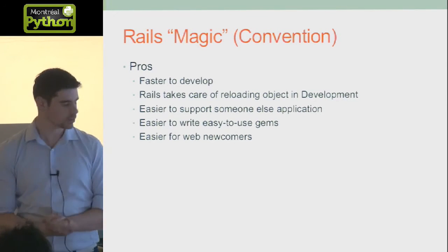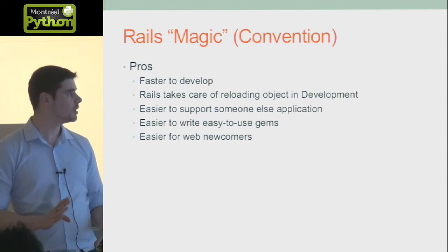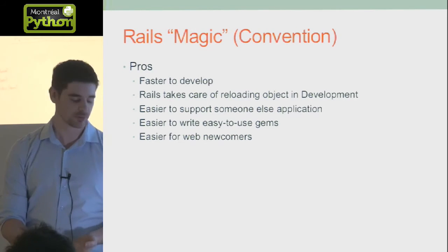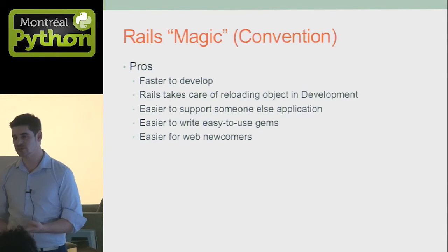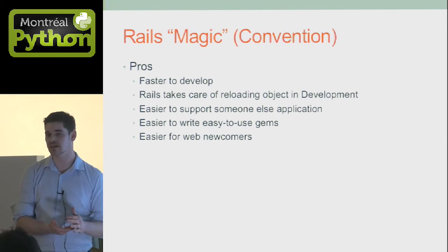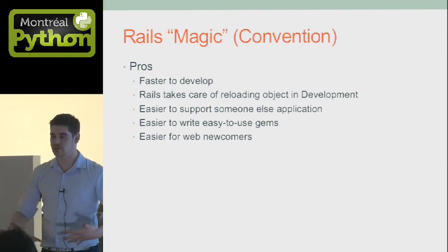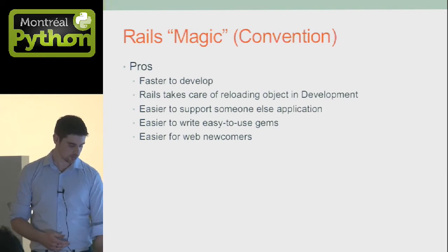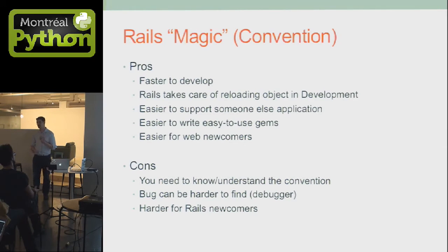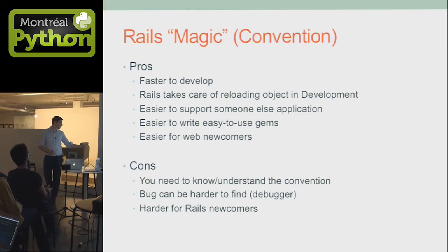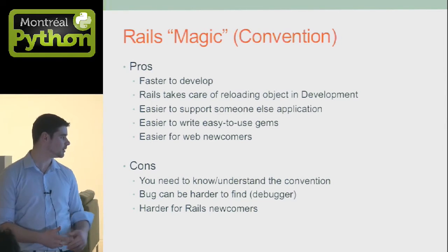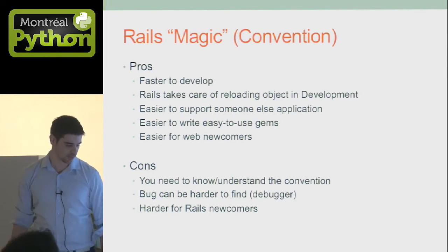So what are the pros of convention? It's faster to develop because you don't need to write a lot of routing boilerplate. Rails handles reloading. It's a lot easier to read someone else's application because it's structured the same as yours. It's easier to write gems — this is why we have so many libraries, because everyone has the same code structure so you can inject your library into any application. It's also easier for newcomers because you don't need to manage all that setup. On the other side, the cons: you need to know and understand the convention well. The code is running in the background — it's not magic, but it can be harder to find. The debugger is really useful for stepping into the framework to see what's happening. And it's harder for Rails newcomers because you need to know the convention.